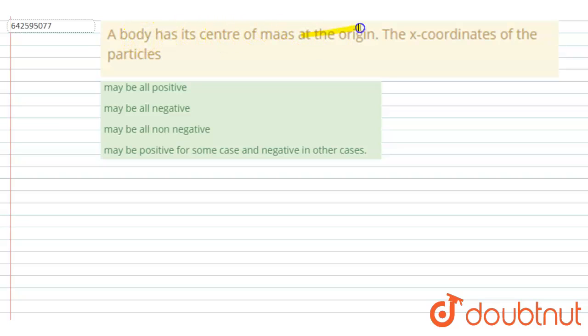The x-coordinate of the particle will be, so if I talk about the x-coordinate of the center of mass, we can see the x-coordinate of the center of mass is defined as m1*x1 plus m2*x2 and so on, in division I will write total mass, that is m1 plus m2 plus m3 and so on.